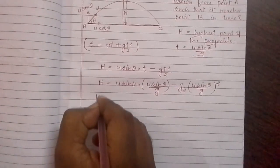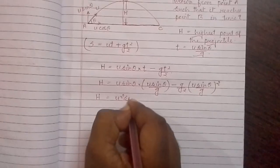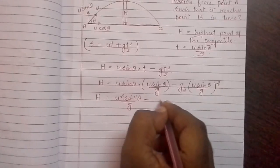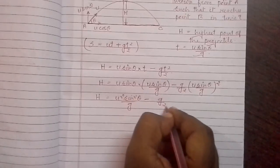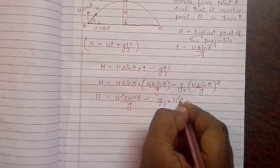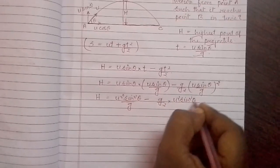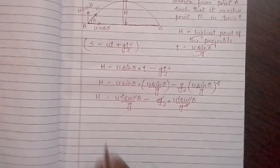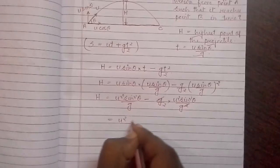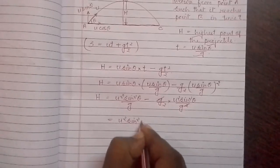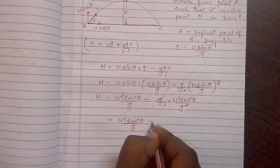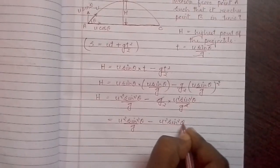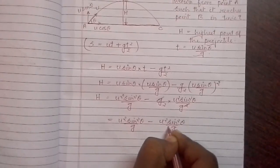Simplifying, we can write h equals u square sin theta by g minus g by 2 into u sin theta by g whole square. We can cancel and simplify further.